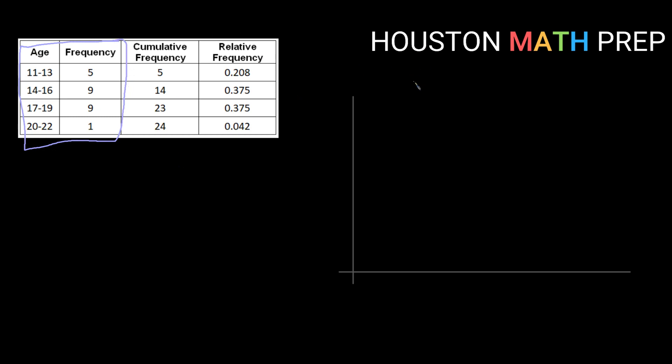So I'm going to start off creating my title like I normally do. So this is going to be a frequency polygon of ages. My horizontal axis is going to be of my ages and I'm going to note that those are in years. And my vertical axis is going to be my frequency.